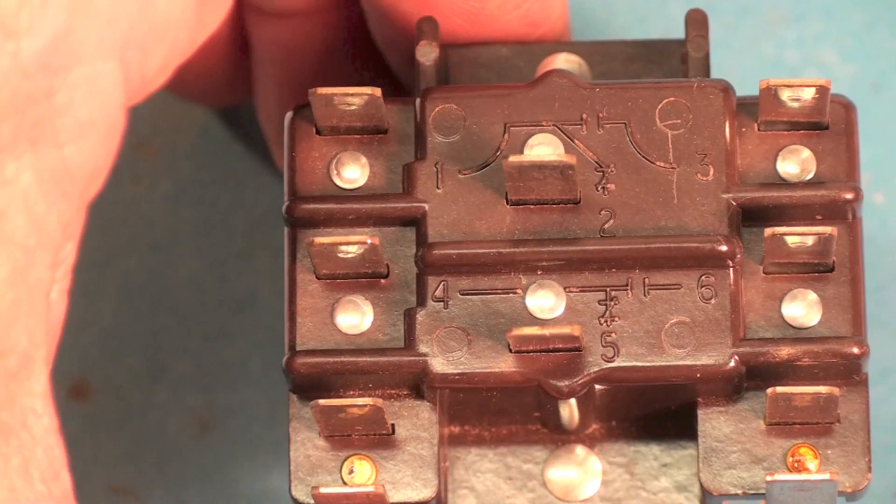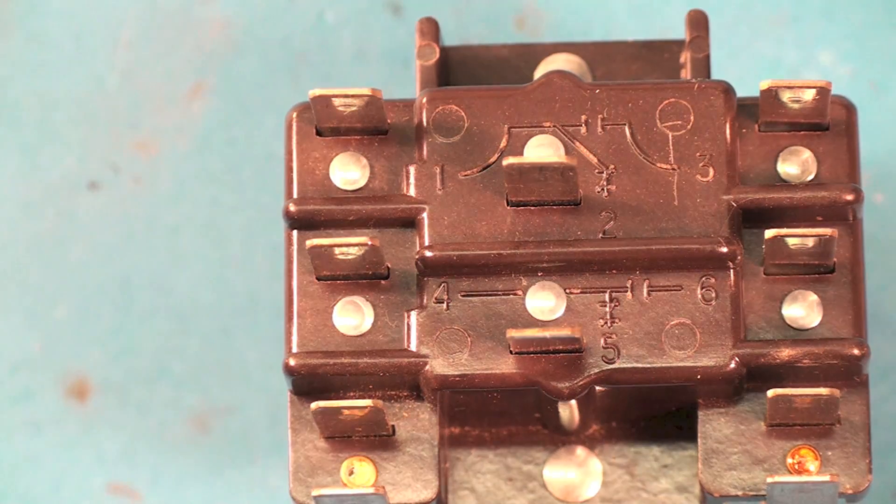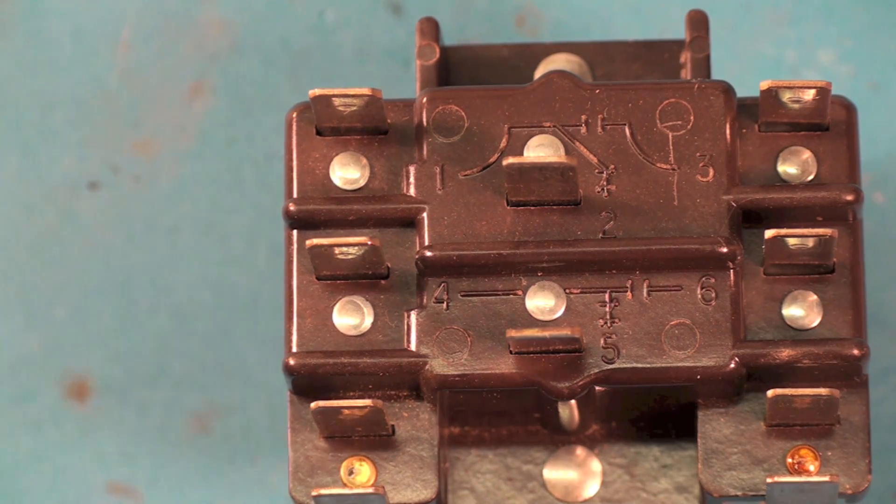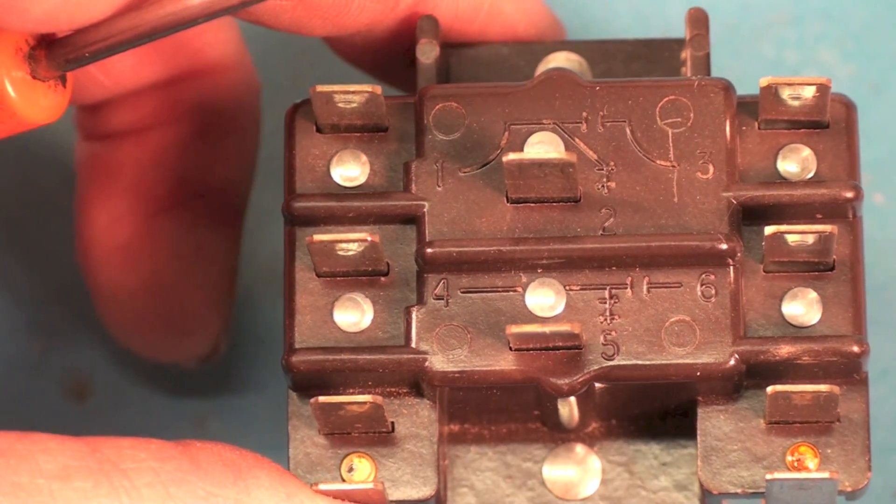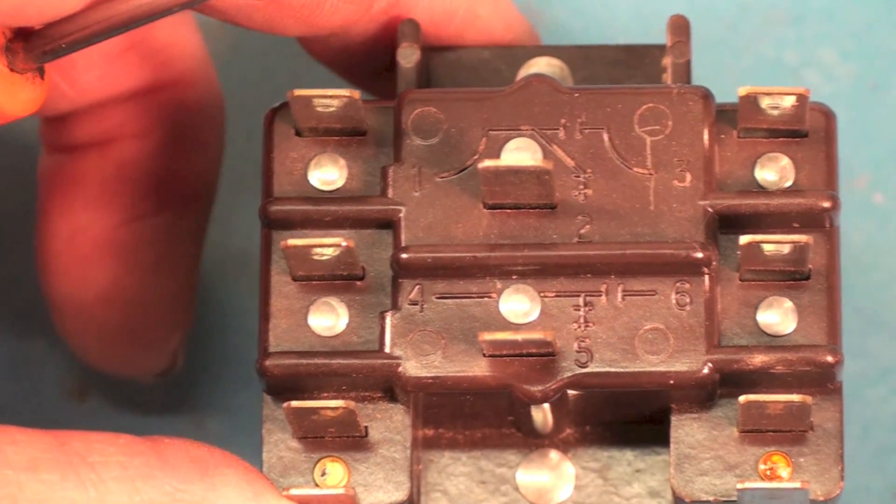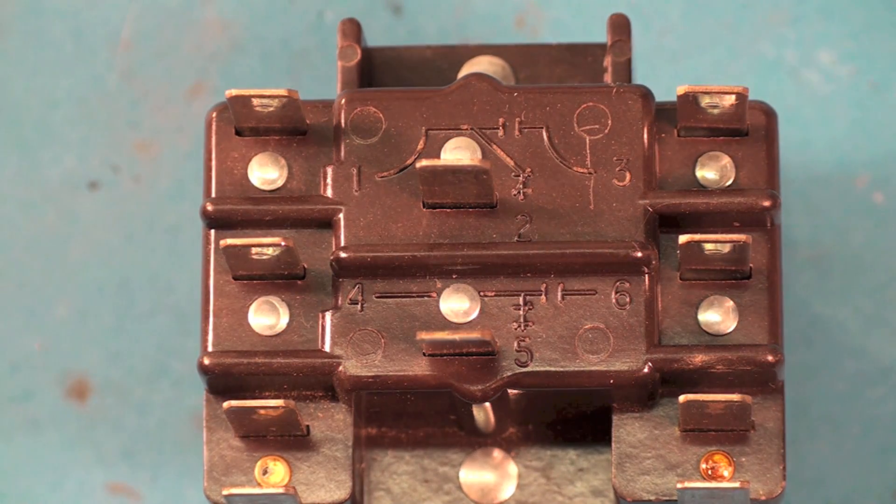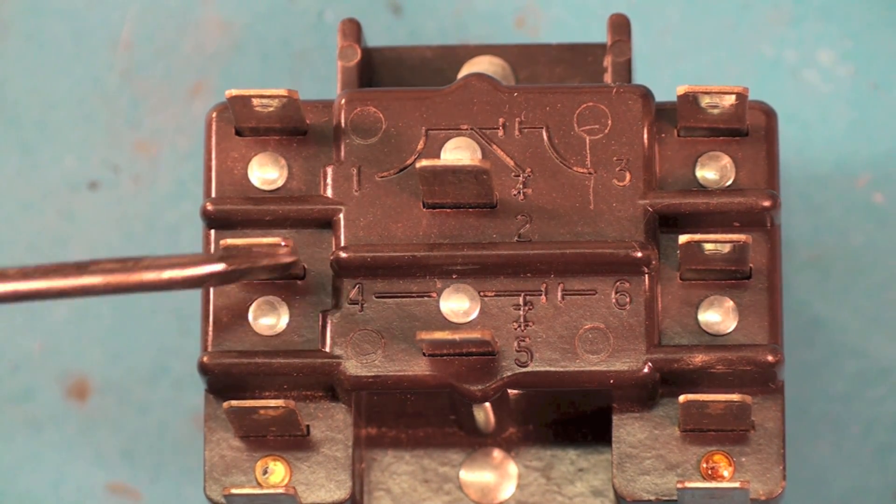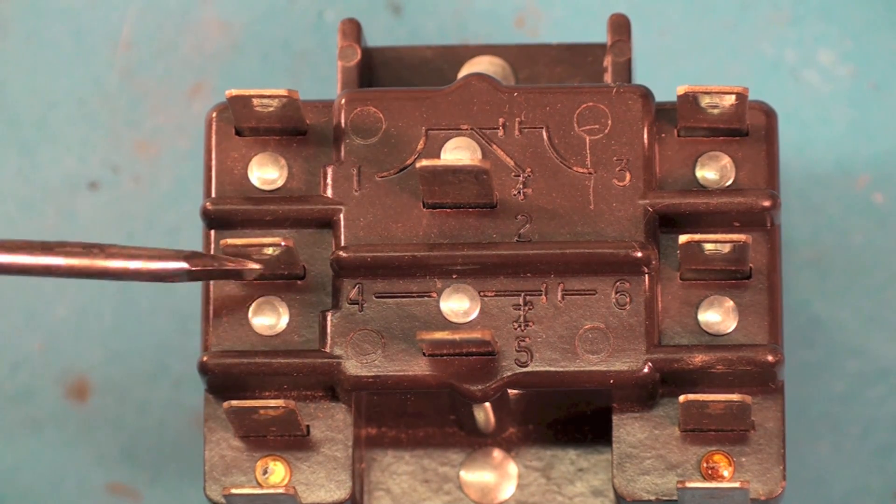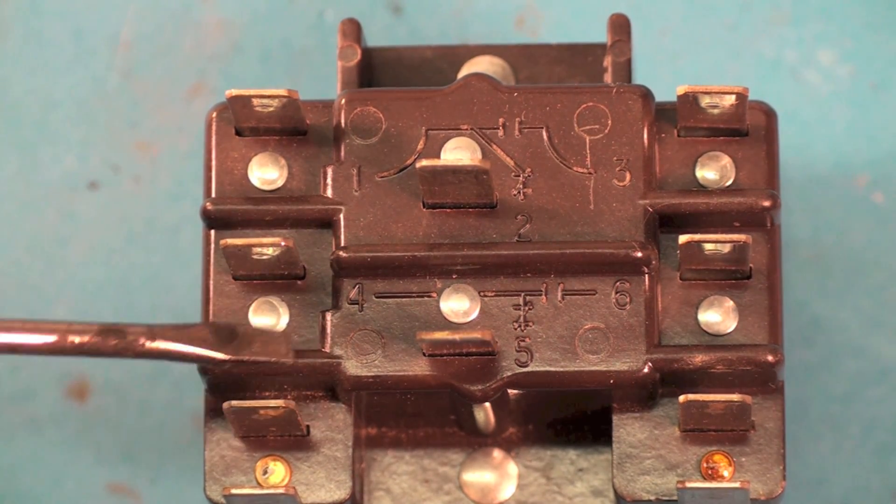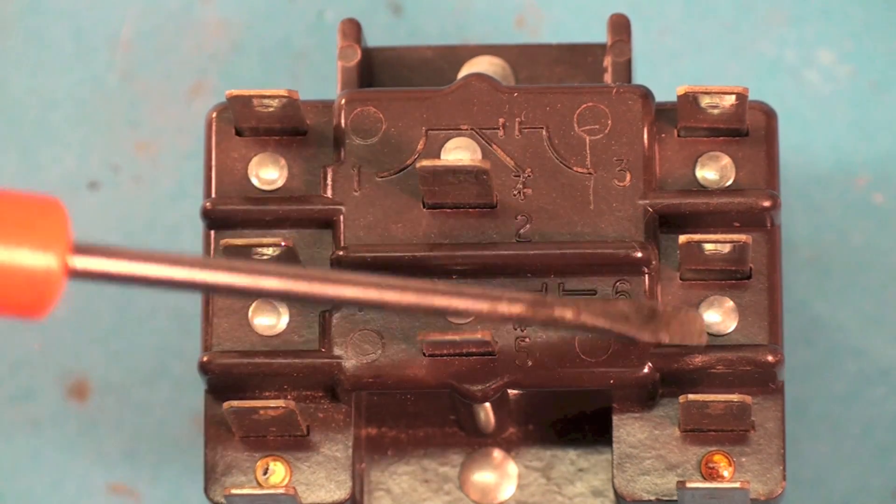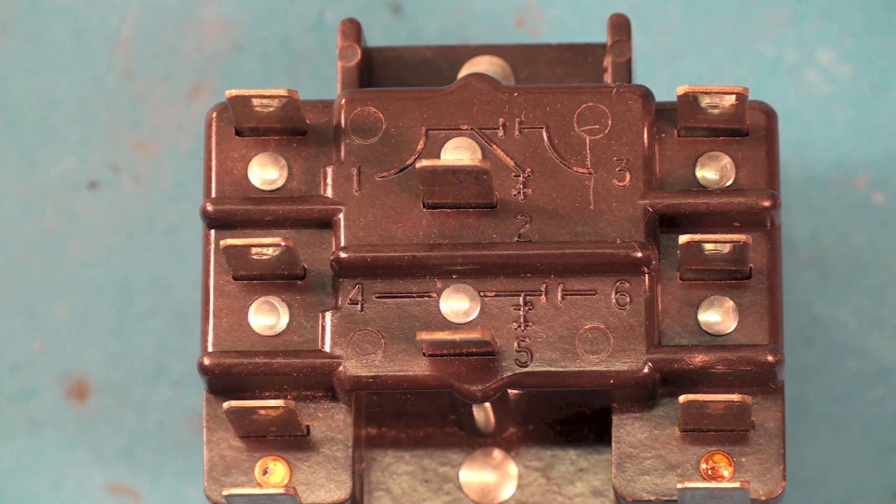Now, this becomes the harder part. There are two single pole, double throw switches in this relay. If you look at number four, right here, that's going to be here. You see these bosses that stick up here, and there's a boss here, and there's a boss there, and here, and here. Those are to tell you where the separations are.